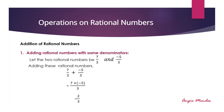Let us begin with the first operation on rational numbers, which is addition. While adding rational numbers with the same denominators, we need to follow some rules. Let us take the example of two rational numbers: 7 upon 3 and minus 5 upon 3. These rational numbers have the same denominators.